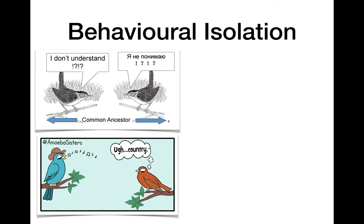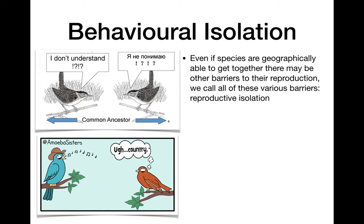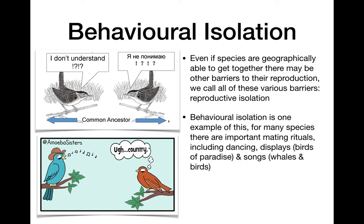The next type of isolation is called behavioral isolation. Even if a species is able to get together geographically — no river, no mountain range, not on different islands — there are other barriers to reproducing. These are generally termed reproductive isolation, and the first type we'll cover is behavioral isolation.